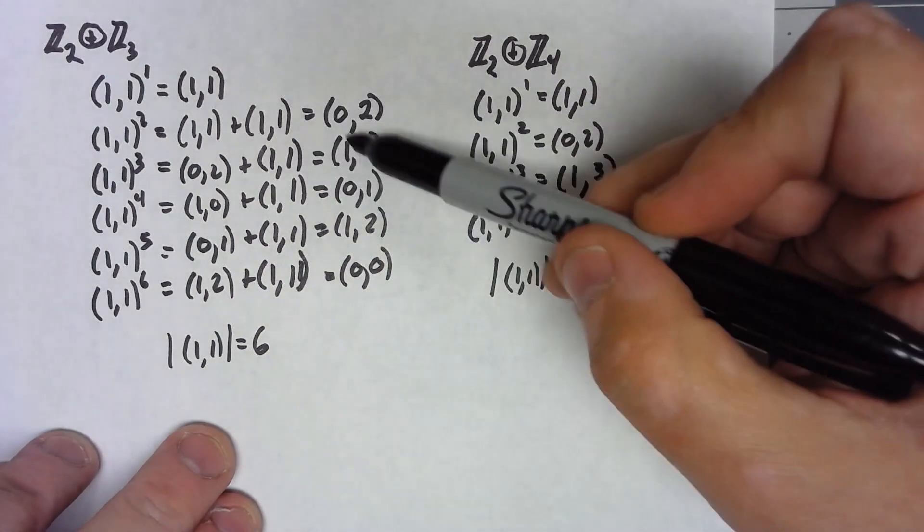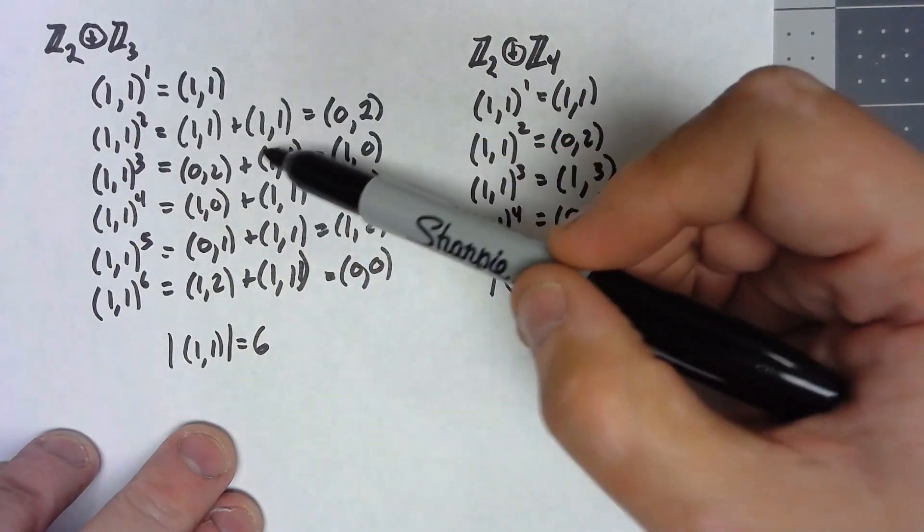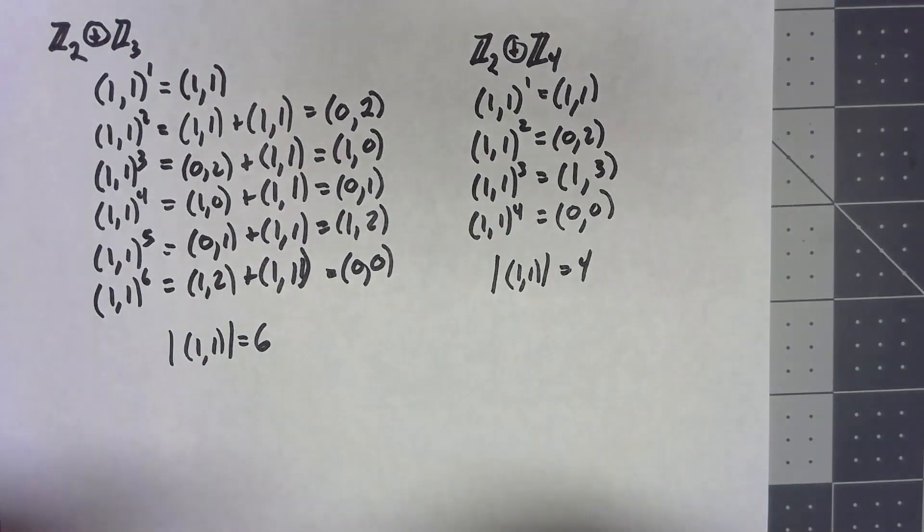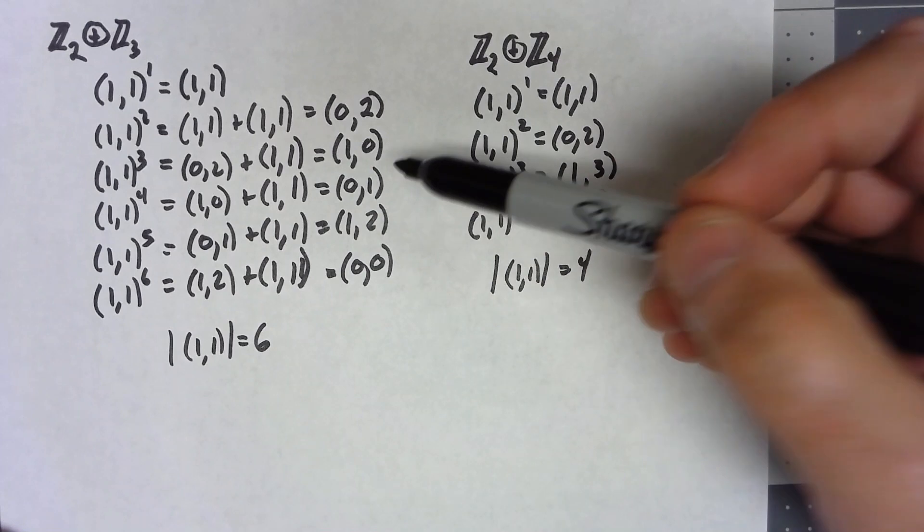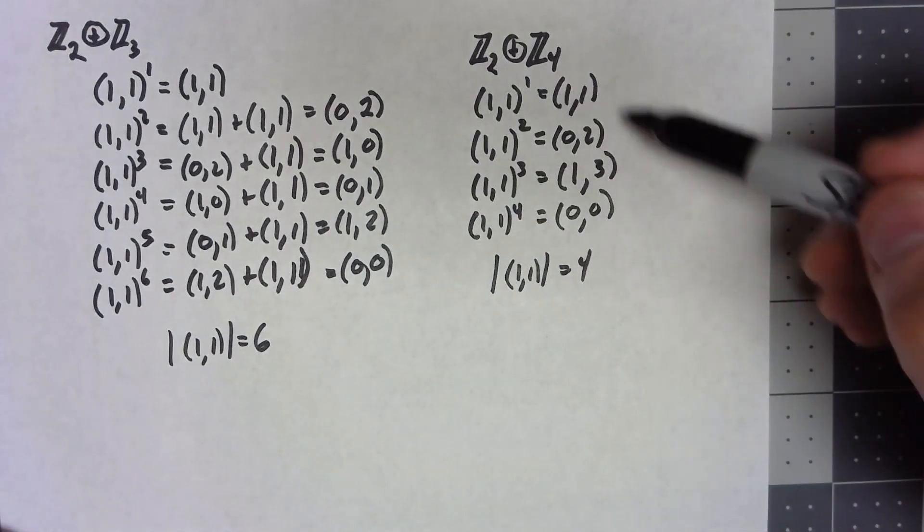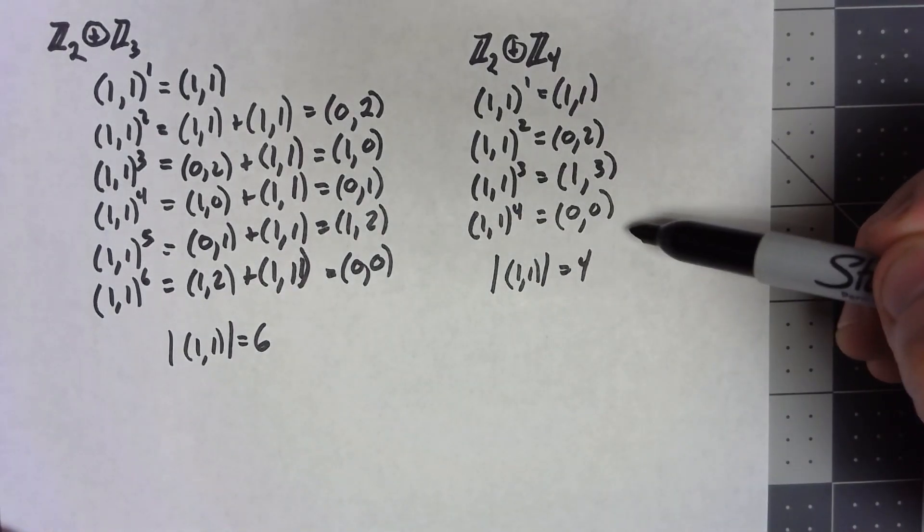What happens over here is that with the 3, because the 3 and the 2 aren't in phase, they cycle back to 0 at different points, whereas with the Z4 they come back to 0 at the same point.